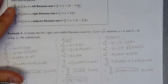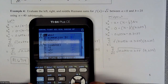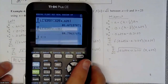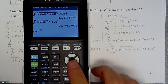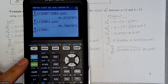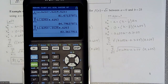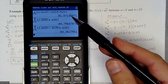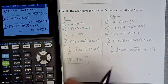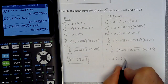That piece times our width 0.625. In the calculator, it looks like the square root of (0.625x minus 0.3125) times our width 0.625. We run the summation from x equals 1 to 40. The midpoint should be somewhere between the other two, and we get 83.3618.